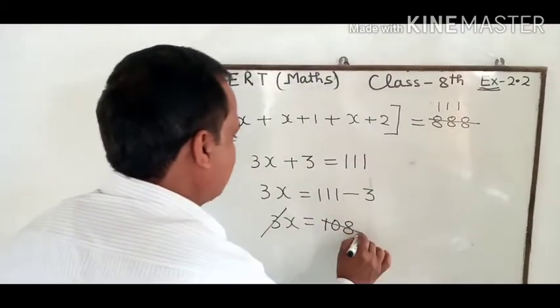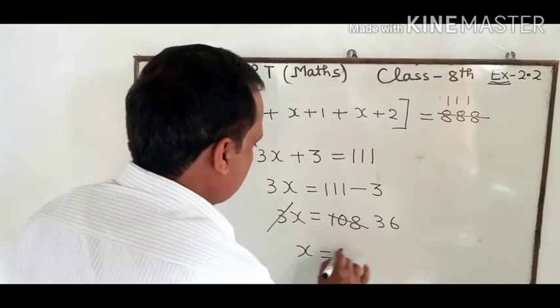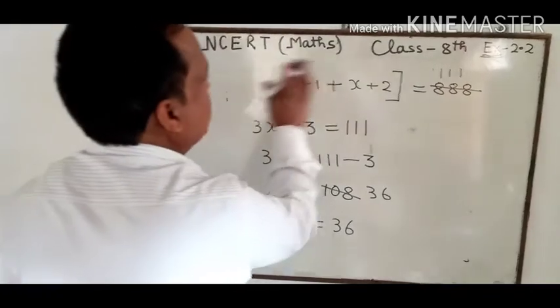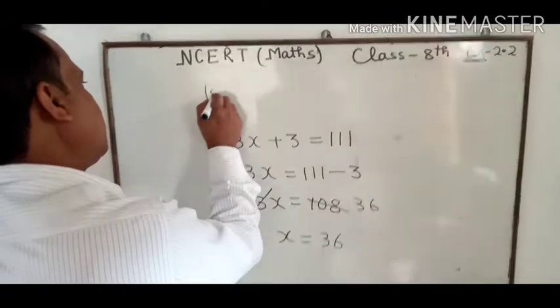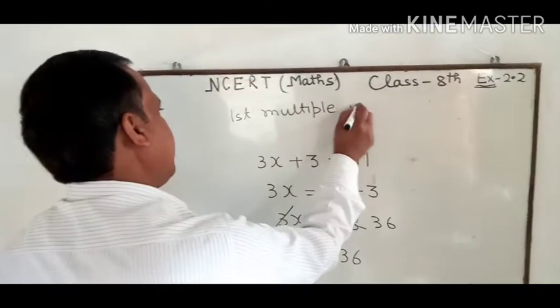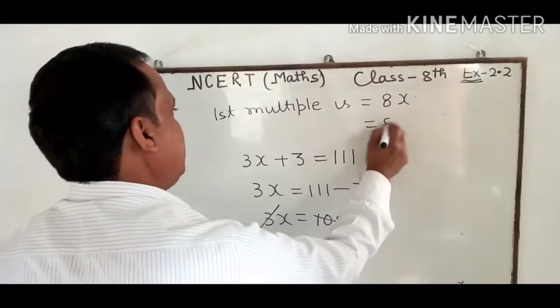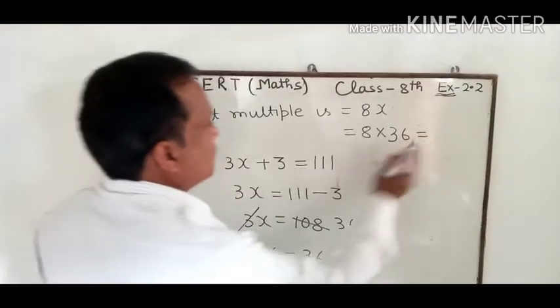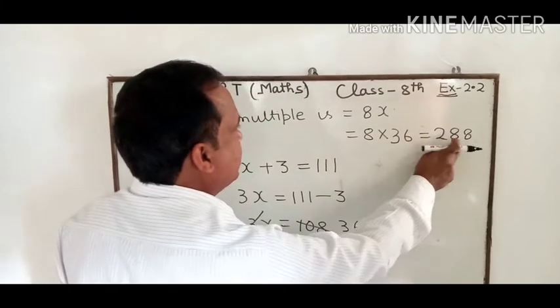Now 3x equals 108. This 3 cancels with 3, so x is equal to 36. Now the first multiple is 8x. 8 times x, we multiply both numbers, we get 288.